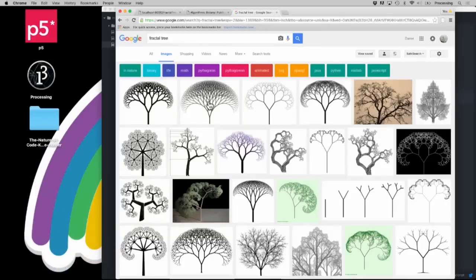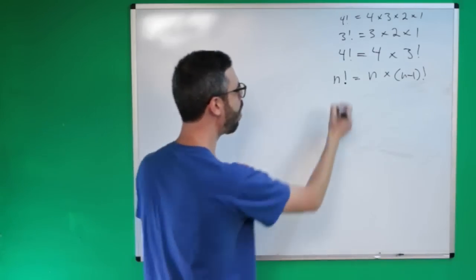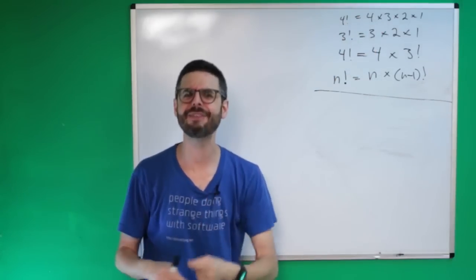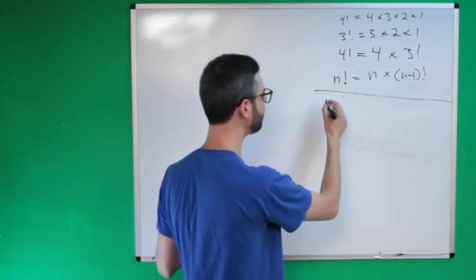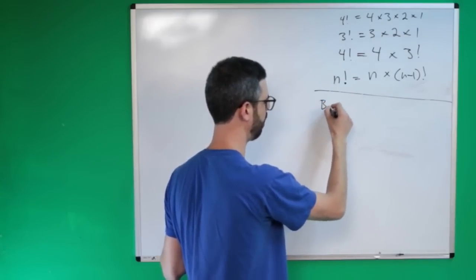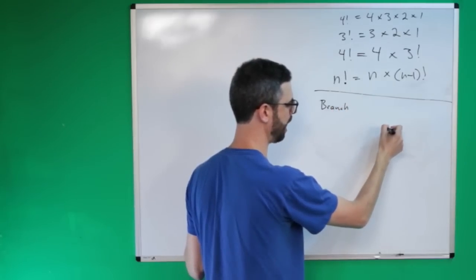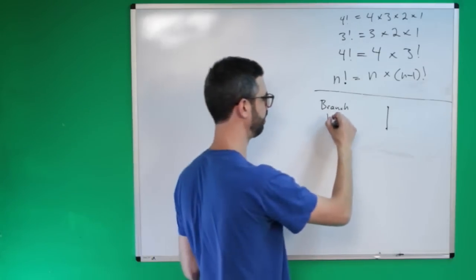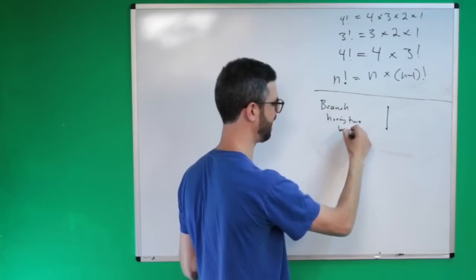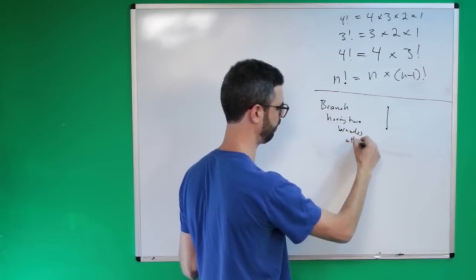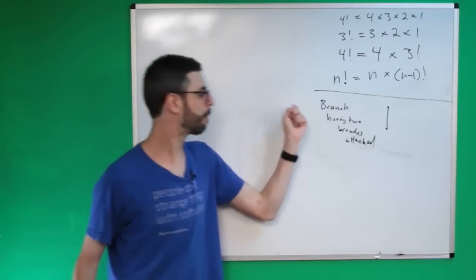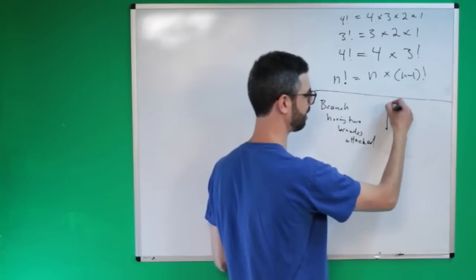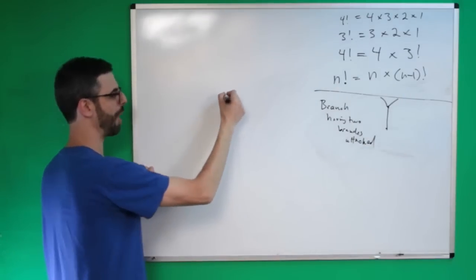One of those things is fractal trees. So what does it mean to have something visual defined recursively? We have this idea of a branch. A branch is a beginning and end point, and it is defined as having two branches attached. This is a branch, and it has two branches attached.